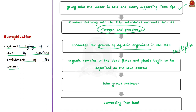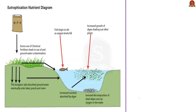Over time, as silt and organic debris pile up, the lake grows shallower and warmer. Marshy plants take root in the shallows and begin to fill in the original lake basin. Eventually, the lake gives way to large masses of floating plants, finally converting the lake into land. Depending on climate, size, and other factors, the natural aging of a lake may span thousands of years.